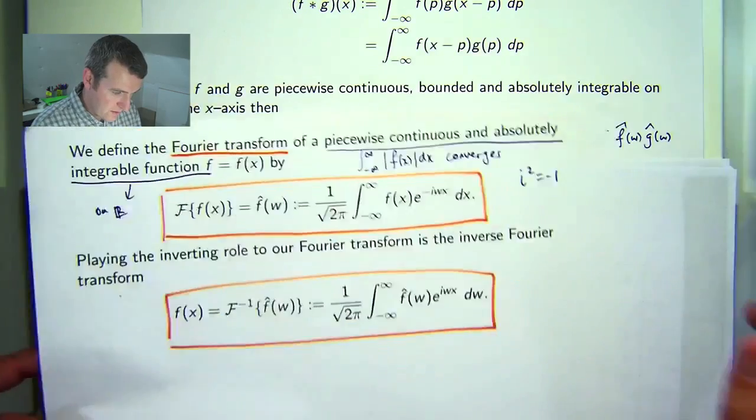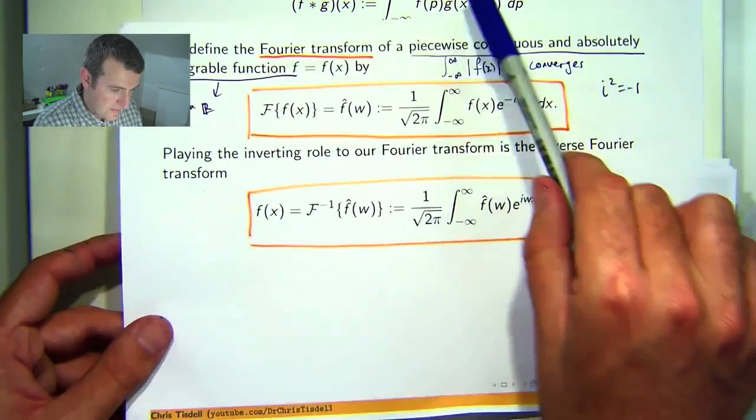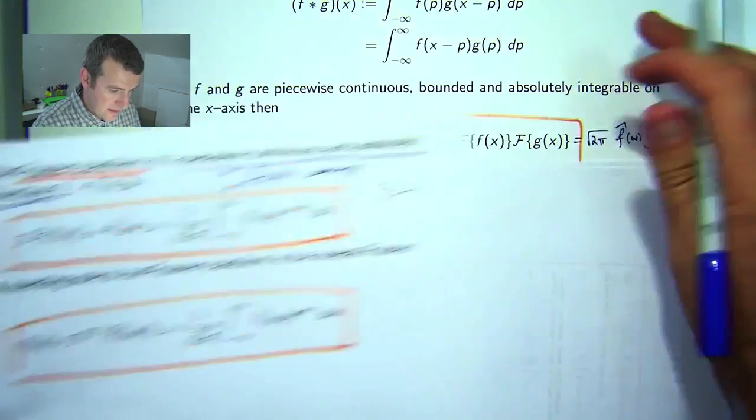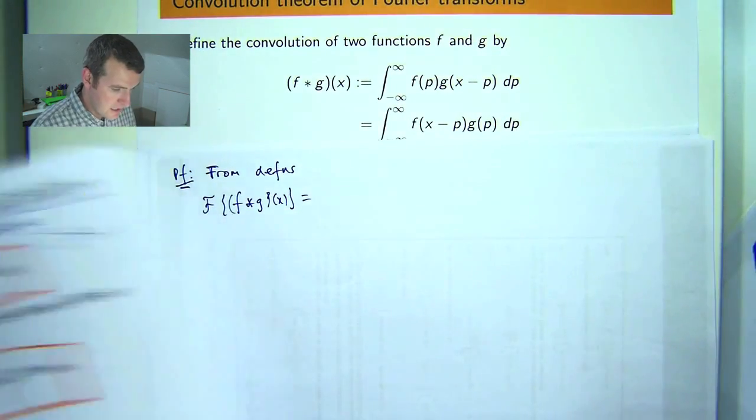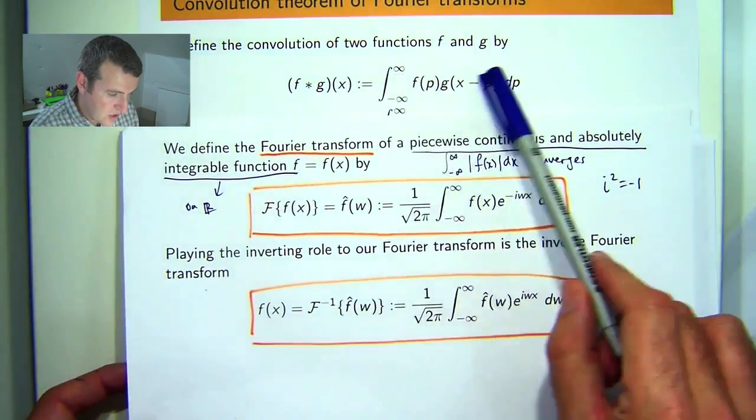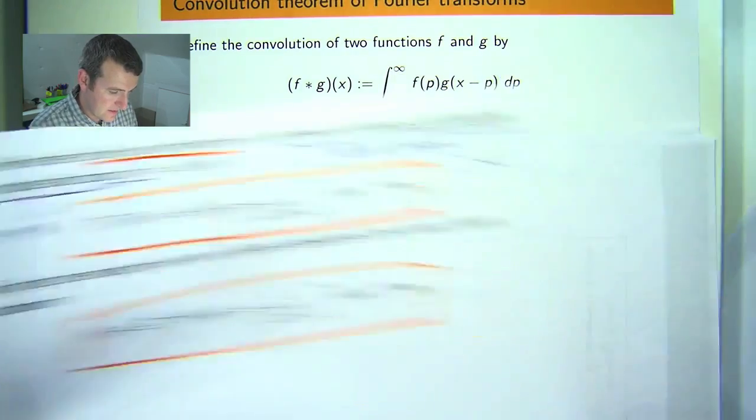And basically it doesn't matter which one you put in, I'm going to put in this here. So, what we would do is replace f of x with this whole improper integral here.